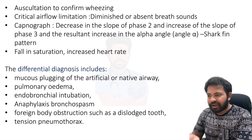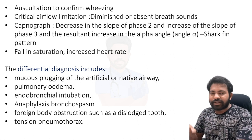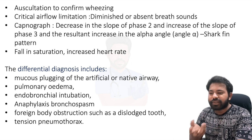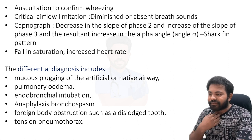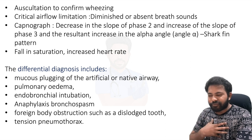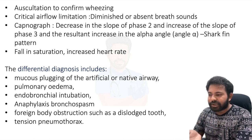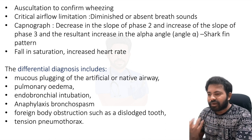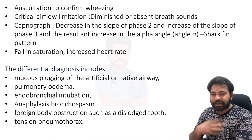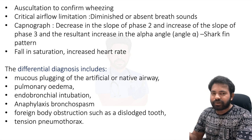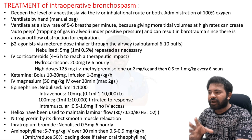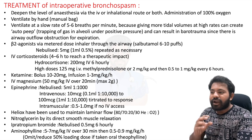Differential diagnoses for intraoperative bronchospasm include: mucus plugging of the ET tube or airway, pulmonary edema, endobronchial intubation, anaphylaxis, foreign body obstruction such as a dislodged tooth, and tension pneumothorax. All these causes must be excluded before confirming bronchospasm.